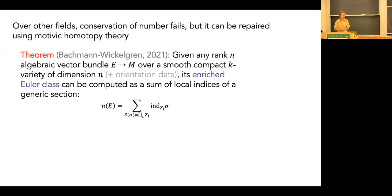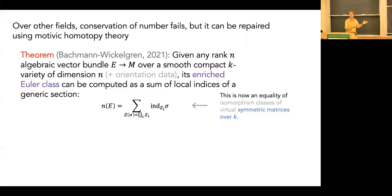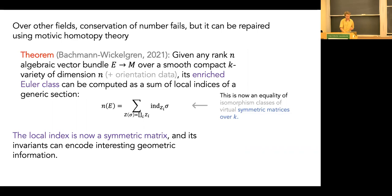These local indices are no longer integers — they become symmetric matrices over k, or classes in the Grothendieck–Witt ring of k. The invariance of this local index encodes interesting geometric information. Over the complex numbers you'd take the rank of a matrix and recover the multiplicity of a solution, but over other fields there are more invariants needed to classify symmetric bilinear forms, and those encode local geometry not visible over the complex numbers.